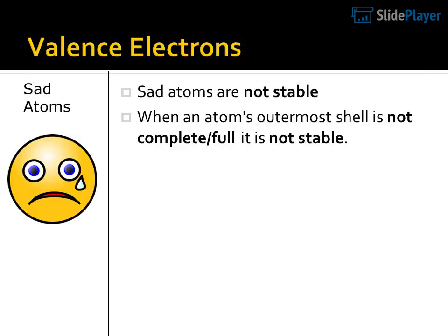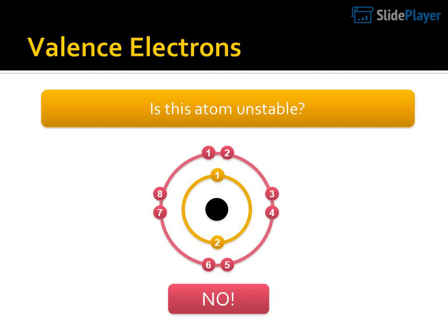Sad atoms are not stable. When an atom's outermost shell is not complete or full, it is not stable. Valence electrons. Is this atom unstable?